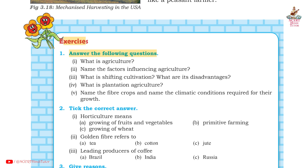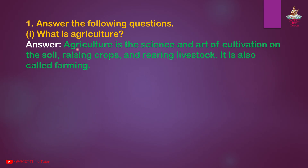Question 1: What is agriculture? Answer: Agriculture is the science and art of cultivation on the soil, raising crops and rearing livestock. It is also called farming.